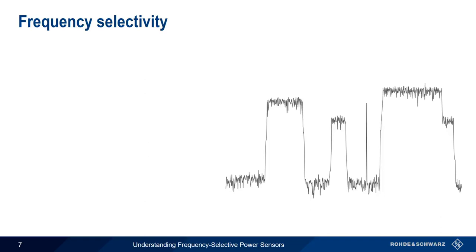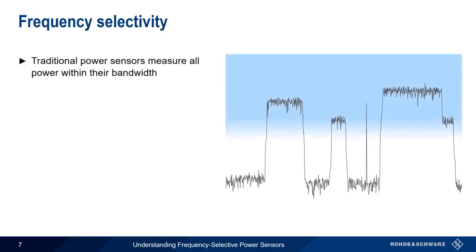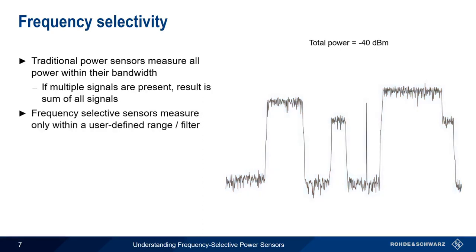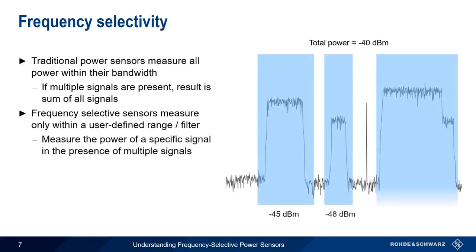It's important to remember that these three types of traditional power sensors measure all of the power within their bandwidth. If multiple signals are present, the result is the sum of the power in all the signals. Frequency selective sensors, on the other hand, only measure within a user-defined frequency range or filter width. As a result, these sensors can measure the power of a specific signal, even in the presence of multiple signals.